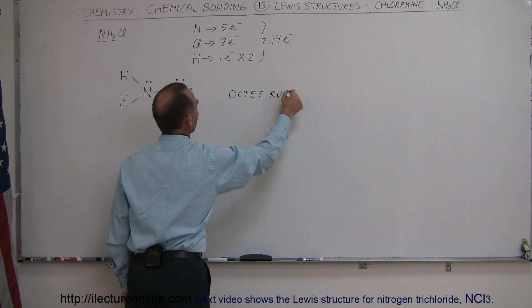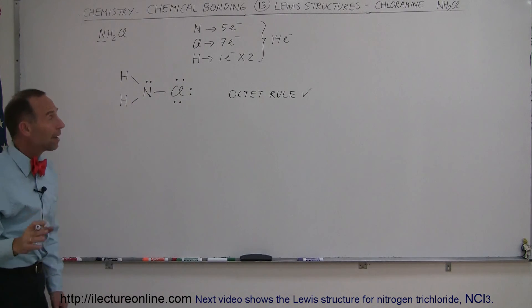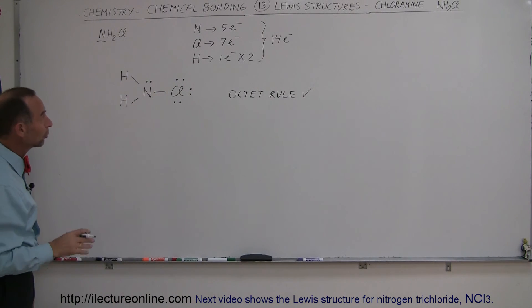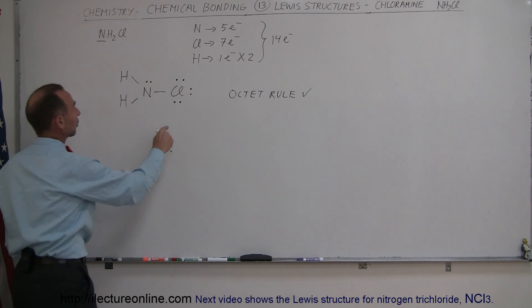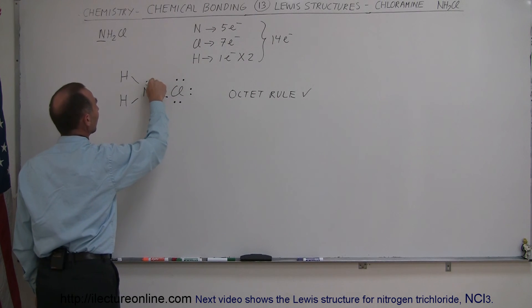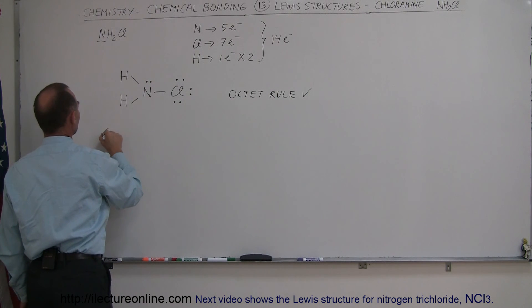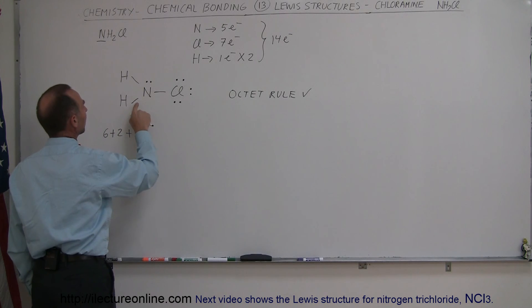Octet rule, we're good to go on that one. How about the amount of electrons used in all the bonding? We should have a total of 14. Notice that chlorine has six free ones, and so does nitrogen—it has two. So it would be six plus two, plus the number of electrons used in the bonding.